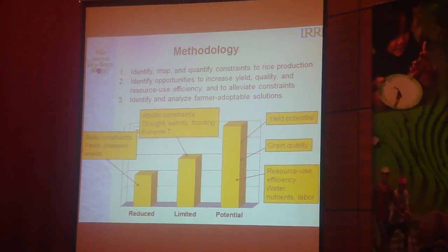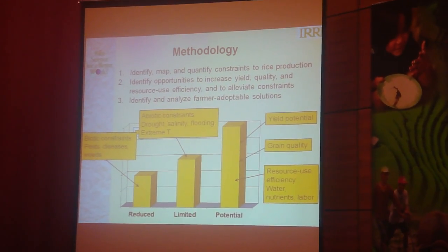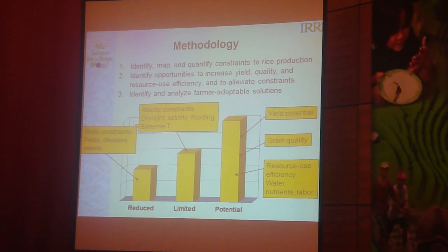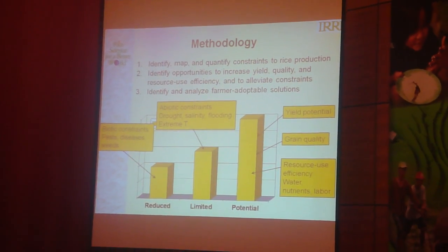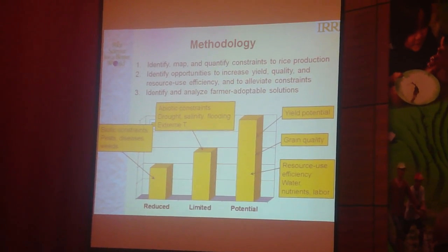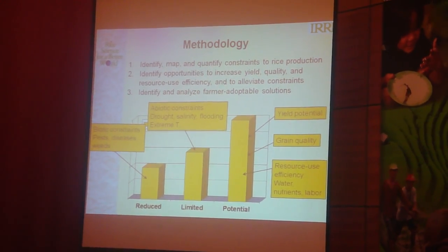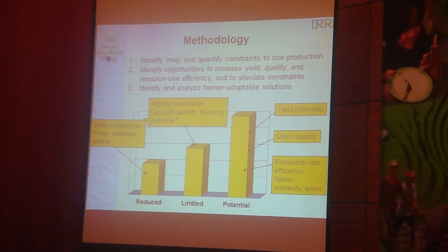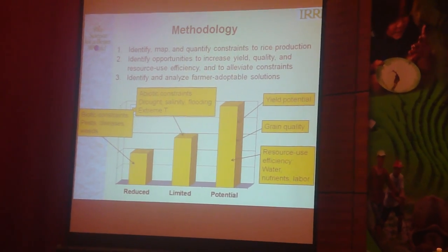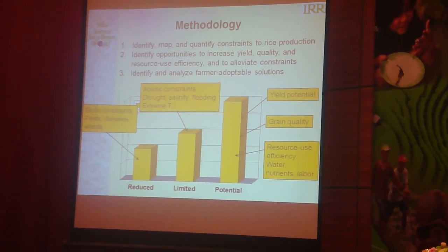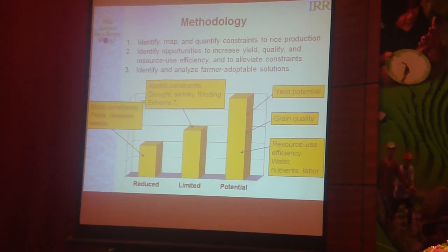Pests include insects, but also rodents. We may also have to look at golden apple snails and birds when talking about Africa. These are the main working groups that looked at these constraints and opportunities.